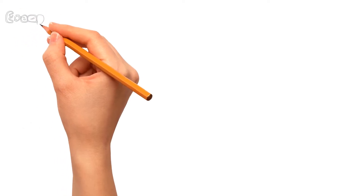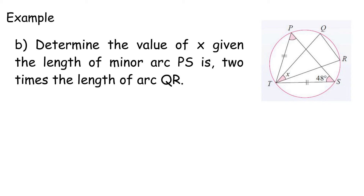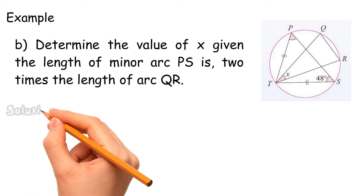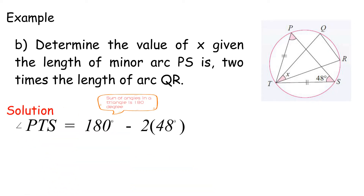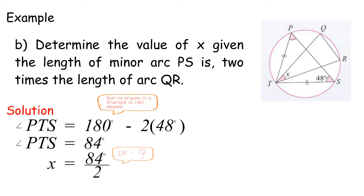Example B: Determine the value of X, given the length of minor arc PS is 2 times the length of arc QR. Angle PTS equals 180 degrees minus 2 times 48 degrees, equals 84 degrees. X equals 84 degrees over 2, equals 42 degrees.